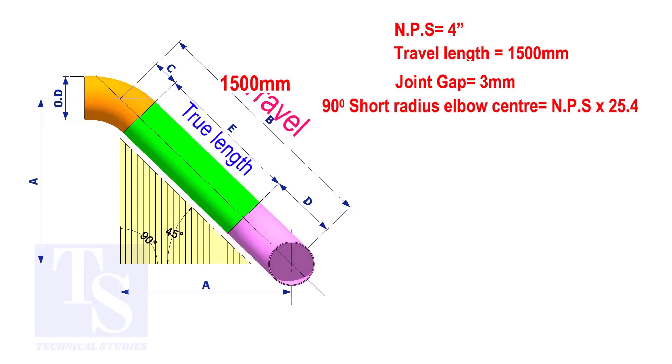To calculate the elbow center of a 90 degree short radius elbow, multiply the nominal pipe size by 25.4. The answer is 101.6 millimeters.